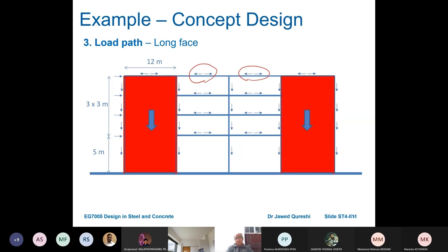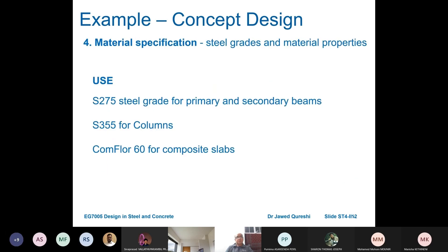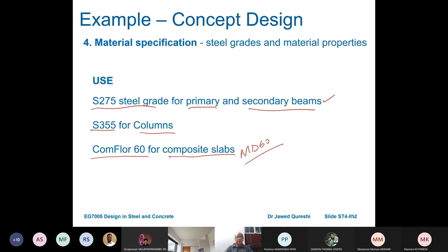For material specification, I will use S275 steel for primary and secondary beams, which is what we normally use in the UK. I will use S355 for columns, and ComFlor 60 for composite slabs, because I am using a primary-secondary beam configuration.